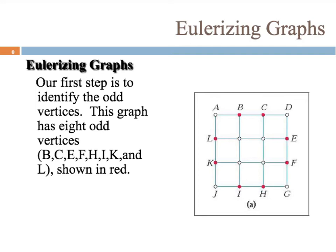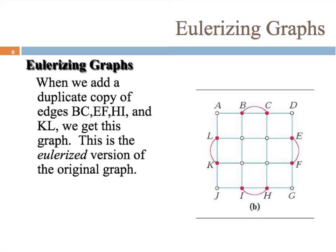What we're going to have to do is Eulerize those — add an extra edge to make those vertices not odd. The extra edge is added on B and C. Now, instead of B having degree 3, it has degree 4, and C has degree 4 instead of 3 as well. You can see the same thing happening with E and F, I and H, and L and K. This is the Eulerized version of the original graph.